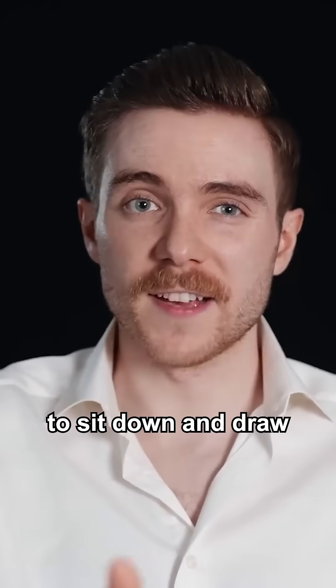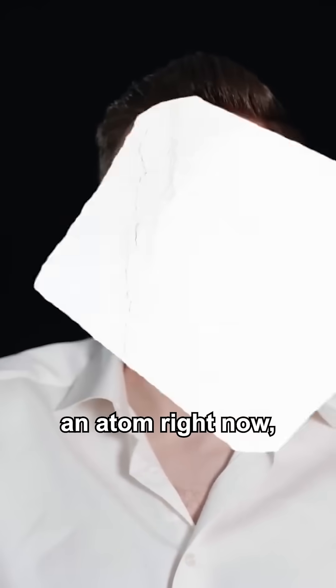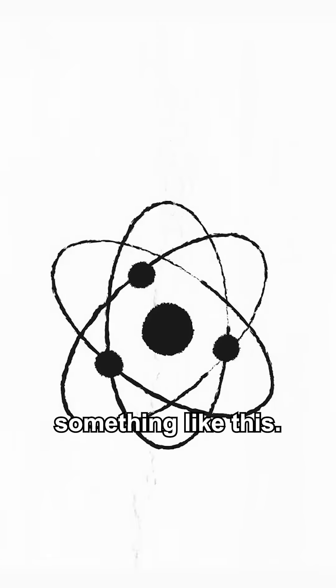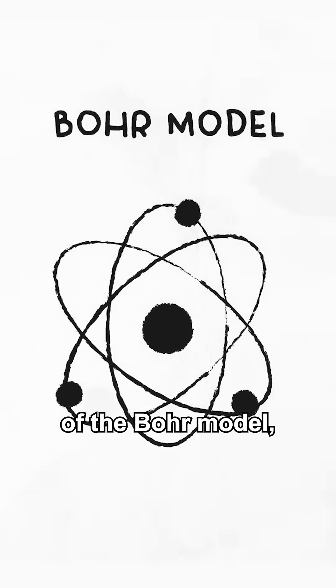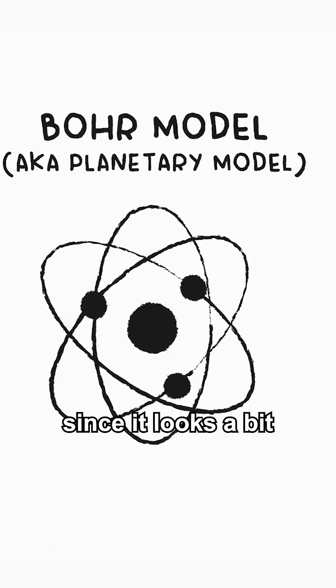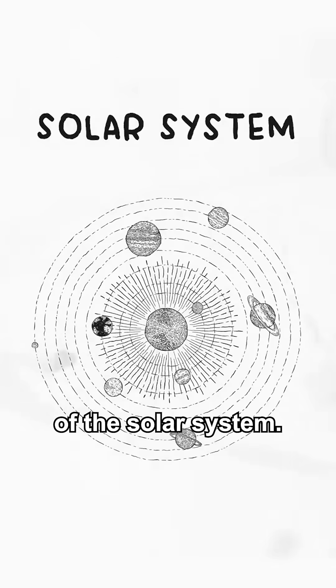If I was to ask you to sit down and draw an atom right now, you'd probably come up with something like this. It's an example of the Bohr model, often called the planetary model since it looks a bit like a mini version of the solar system.